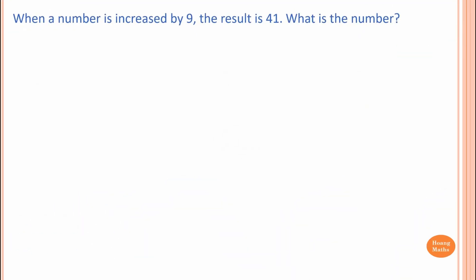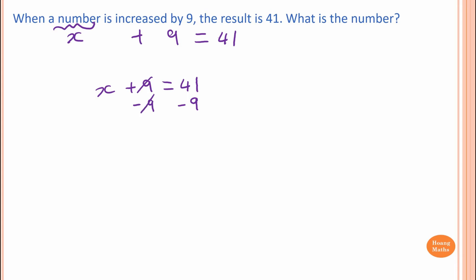First one: when a number is increased by 9, the result is 41. What is the number? So we don't know what the number is, so we just write x. Increase means plus, so that means x plus 9, and the result means equal to 41. So x plus 9 is equal to 41. To solve this, we minus 9 on the left hand side, because we want x by itself. So whatever you do on the left, you do the same on the right. So minus 9 as well — that cancels out. So x is equal to 32. Therefore, the number is 32.